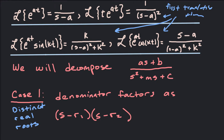The key is to look at the denominator. We have a numerator and a denominator, and the denominator typically starts off as s² plus ms plus c. We want to look at how it factors, because how it factors tells us how to use our partial fractions. The first case is when we get two distinct real roots when we factor this denominator.